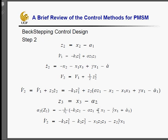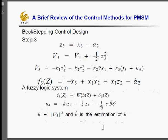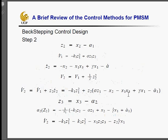In step three, we take the derivative of z3, and we also define the Lyapunov function V3 that combines with V2. Take the derivative of V3 and get the Lyapunov function in this form. But now, we find that f3 is a very complex function because there is alpha2 dot in f3.